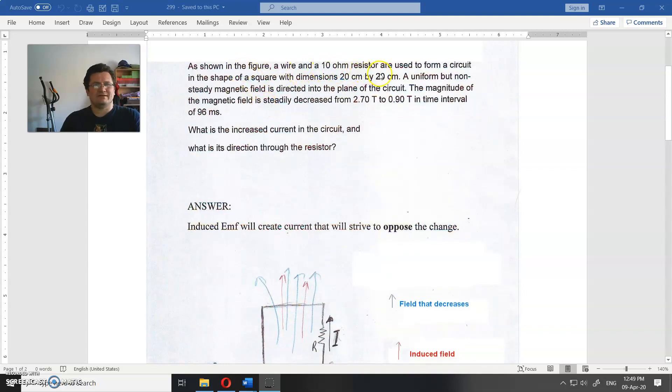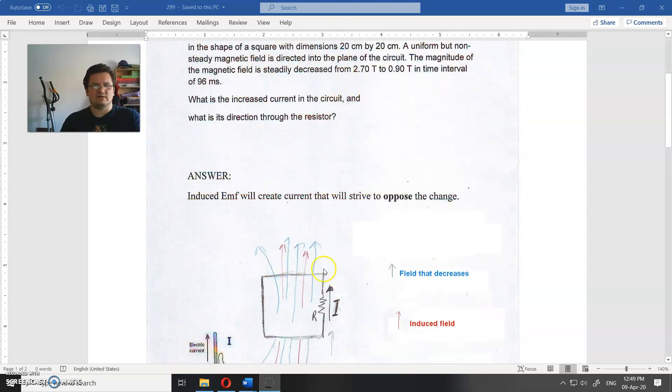As shown in the figure, a wire and 10 ohm resistor are used to form a circuit in the shape of a square, with dimensions 20 cm by 20 cm. A uniform but not steady magnetic field is directed into the plane of the circuit. This is the circuit, this is the resistance, and then there is field that is upward.